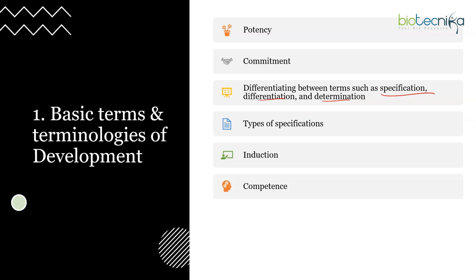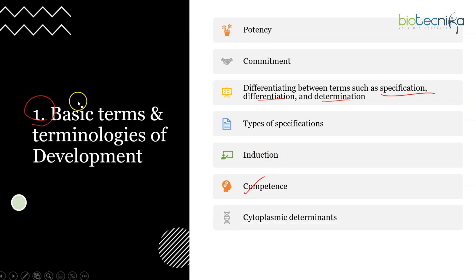Terms such as induction and competence are also important. There is a regional basis of induction, genetic basis of induction, and reciprocal induction. Types like instructive induction and permissive induction can be asked in questions. For competence, you can take lens induction as an example — how cells are competent to it and which factors they must possess. These are the first set of terms which directly come in the questions.